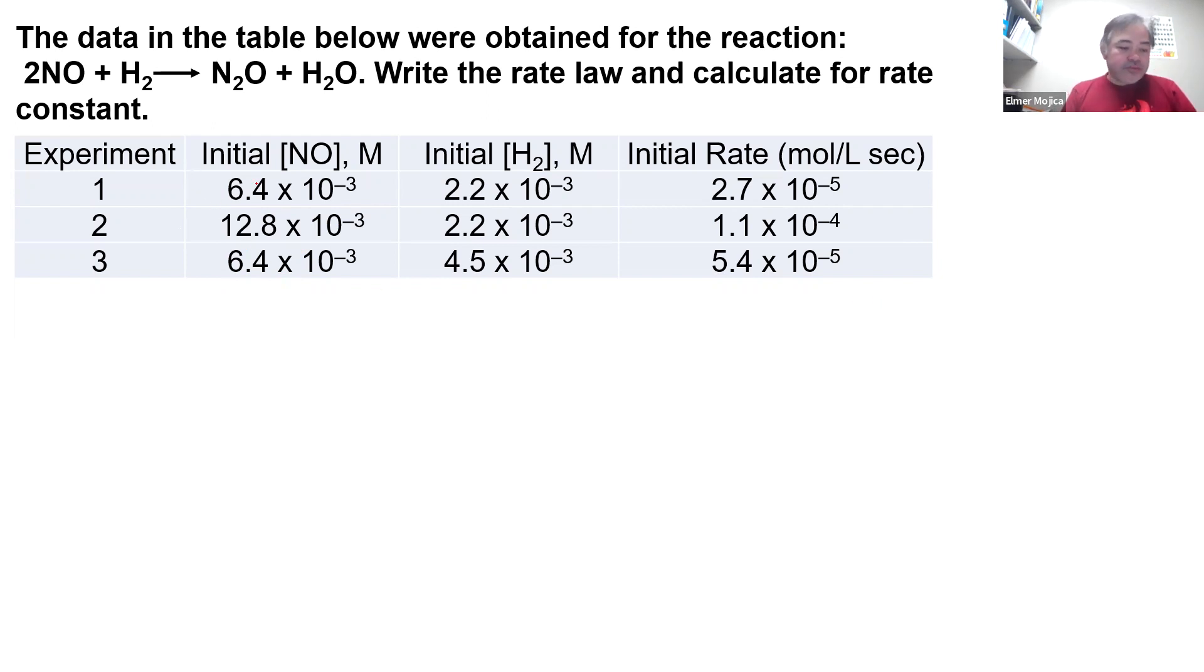The idea is that we have to get the x and y values, the numbers that are raised to a given concentration. We're going to divide the concentration of a given reagent or reactant while the other reactant is constant and compare it also with the initial rate that's changed.